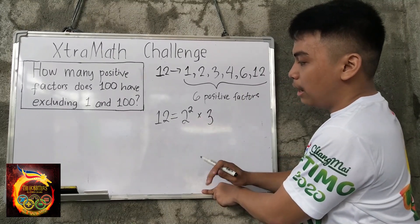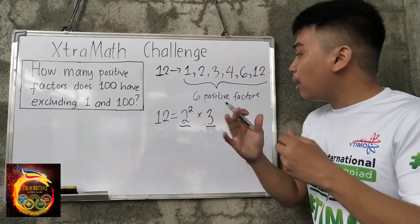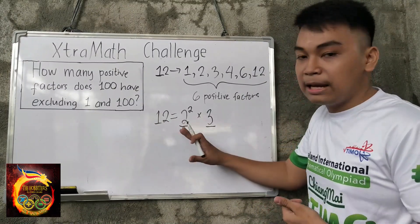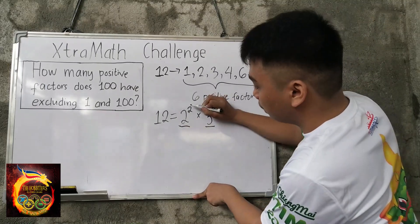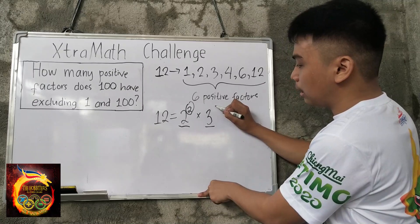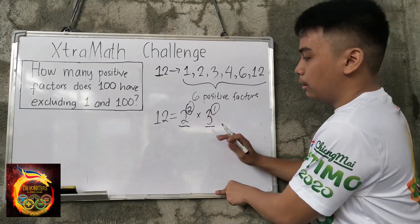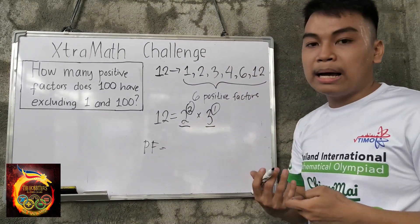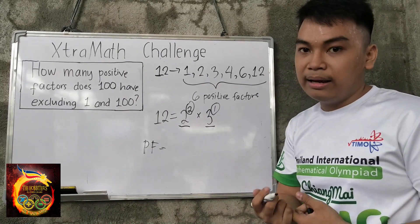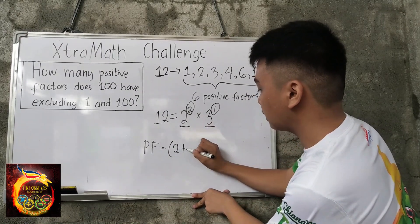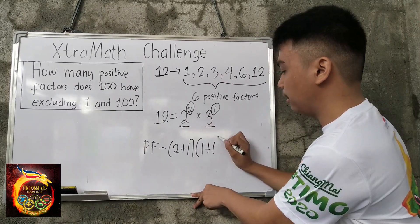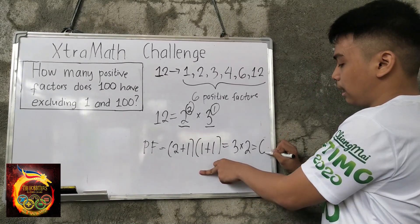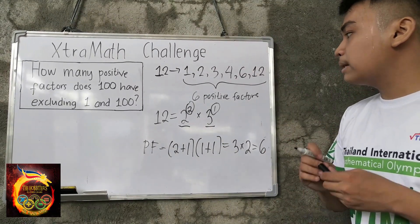So what are the distinct prime factors of 12? They are 2 and 3. To get the number of positive factors, we only need to look at the exponents of the distinct prime factors. The exponent of 2 is 2, and the exponent of 3 is 1. We add 1 to each exponent and then multiply: (2+1) × (1+1) = 3 × 2 = 6. So we have 6 positive factors of 12 — the same answer as before!